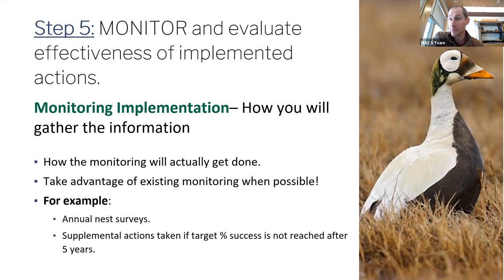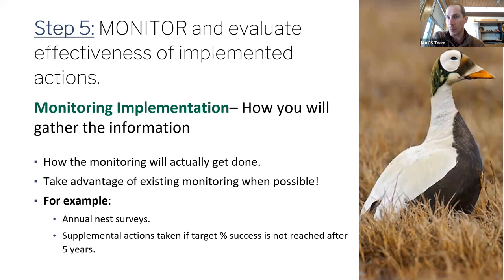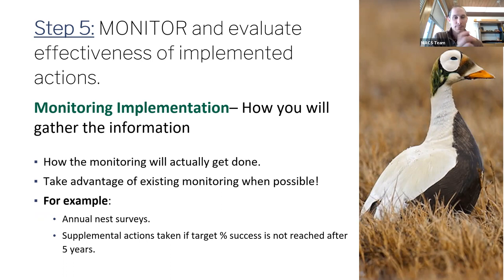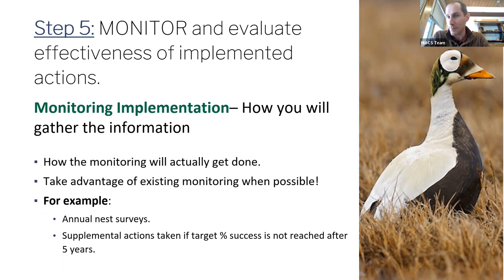We ask you to provide notes on implementation — how would you actually conduct this monitoring? Include notes about critical timing, partner organizations such as universities who can help, and funding sources. Think of this as your notes section on how to implement. You can also note a supplemental action: if electrical fencing doesn't work after five years and nesting success hasn't improved, maybe move on to something more extreme like predator hazing to get jaegers and foxes out of critical nesting habitat while nests are occupied.